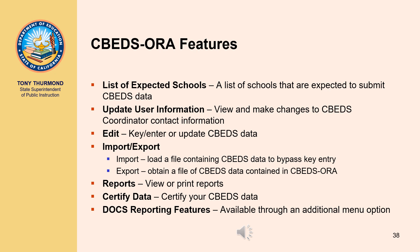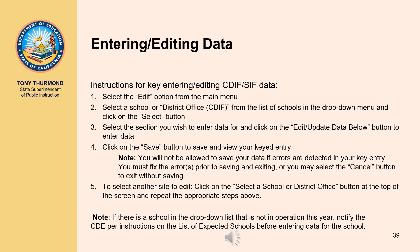There are two options available for entering CDIF and SIF data into CBEDS Aura. The first option is manual key entry, which is used by most districts and IRCs. The second option is to import data, which bypasses key entry and loads a file containing CDIF and SIF data. To key enter data, select the Edit option from the main menu. Select a school or the district office CDIF from the drop-down menu and click the Select button. Selecting a school will load the SIF for that school; selecting the district office CDIF will load the CDIF for the district or county office.